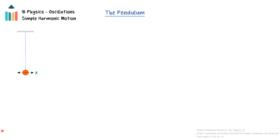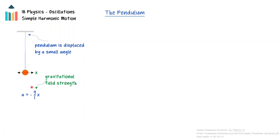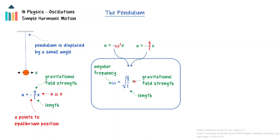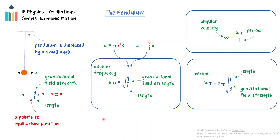A similar analysis of the pendulum makes use of the small angle approximation to determine that the acceleration of the pendulum is given by the equation: a = -(g/L)x, where g is the gravitational field strength and L is the length of the string. This equation demonstrates the two conditions for simple harmonic motion: the acceleration is directly proportional to the displacement and points towards the equilibrium position. Comparing this to the defining equation of simple harmonic motion shows that the angular frequency is equal to the square root of g divided by L. Because omega is equal to 2 pi divided by the period, the period is equal to 2 pi times the square root of L divided by g. This period of motion is independent of the amplitude of oscillation and is determined by the gravitational field strength and the length of the string.